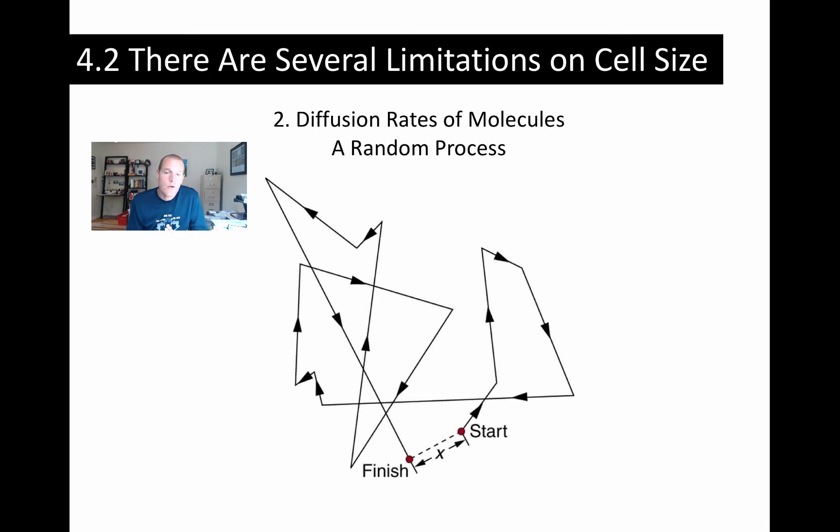So cells have strategies to overcome this kind of thing. You've heard about microtubules being used to carry cargo around the cell. Other molecules are involved in active transport processes of molecules around the cell. And then there are processes such as cytoplasmic streaming, which is called cyclosis in plants.